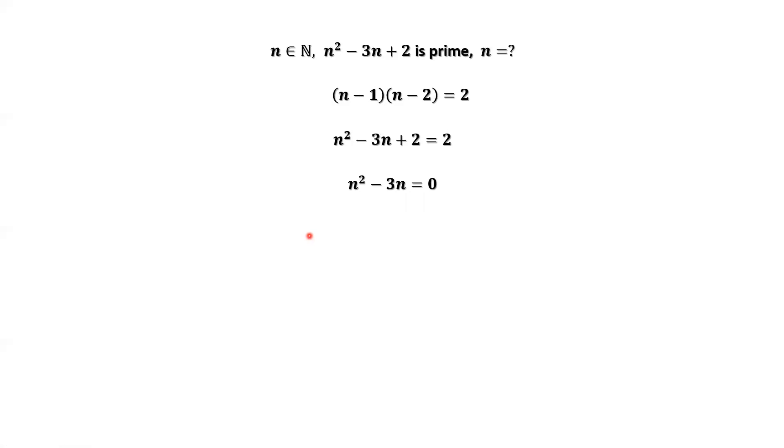Factoring the left-hand side, we have n times n minus 3 equals 0. This implies n equals 0 or 3.